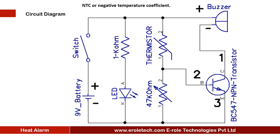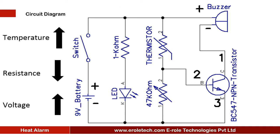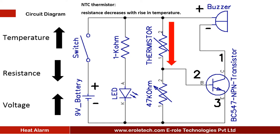Thermistors are of two types: NTC (negative temperature coefficient) and PTC (positive temperature coefficient). We are using an NTC type thermistor. In NTC type, resistance decreases with a rise in temperature. So in this circuit, when the thermistor senses heat, its resistance will decrease. As the resistance decreases, the voltage at the base terminal of the transistor will increase. When this voltage reaches 0.7 volts, the transistor will turn on.